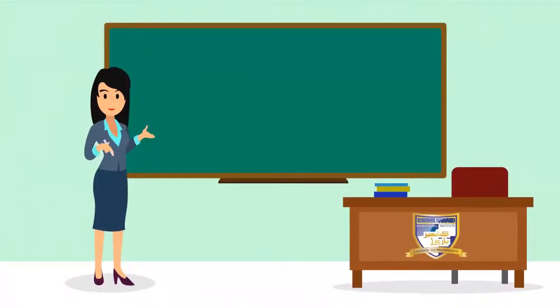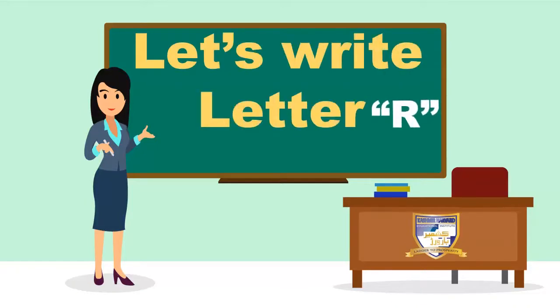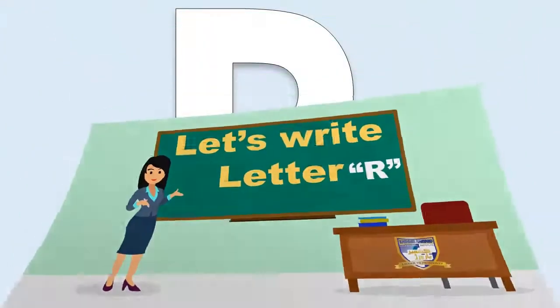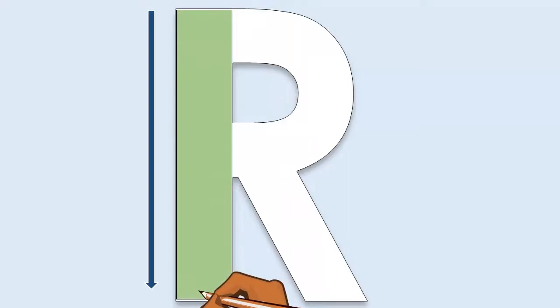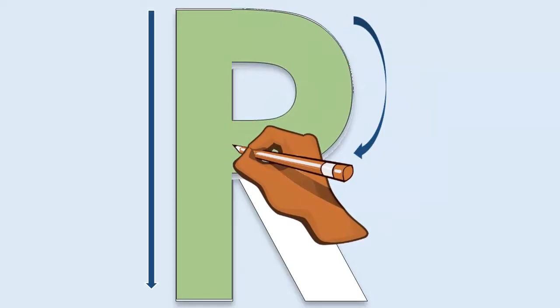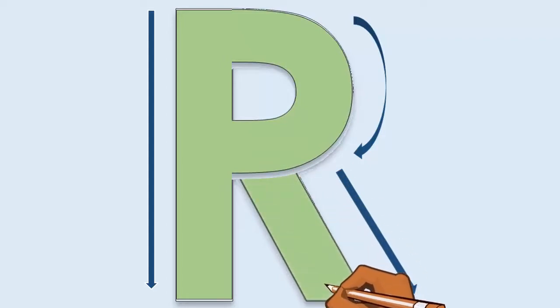Now let's learn how to write the letter R. Kindly note that the writing part is only for class nursery. You need a practice notebook and pencil to write the letter R. Start writing by drawing one standing line, then go back to the tip of the standing line and draw one right curl towards the middle of the standing line, like the letter P.